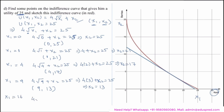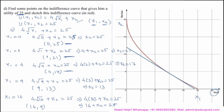For x1 = 16: the equation becomes 4√16 + x2 = 25, giving 4×4 + x2 = 25, so 16 + x2 = 25, giving x2 = 9. The point is (16, 9). Plotting all points — (0, 25), (1, 21), (4, 17), (9, 13), and (16, 9) — and joining them gives the desired indifference curve, shown as a dashed red line representing the utility of 25.